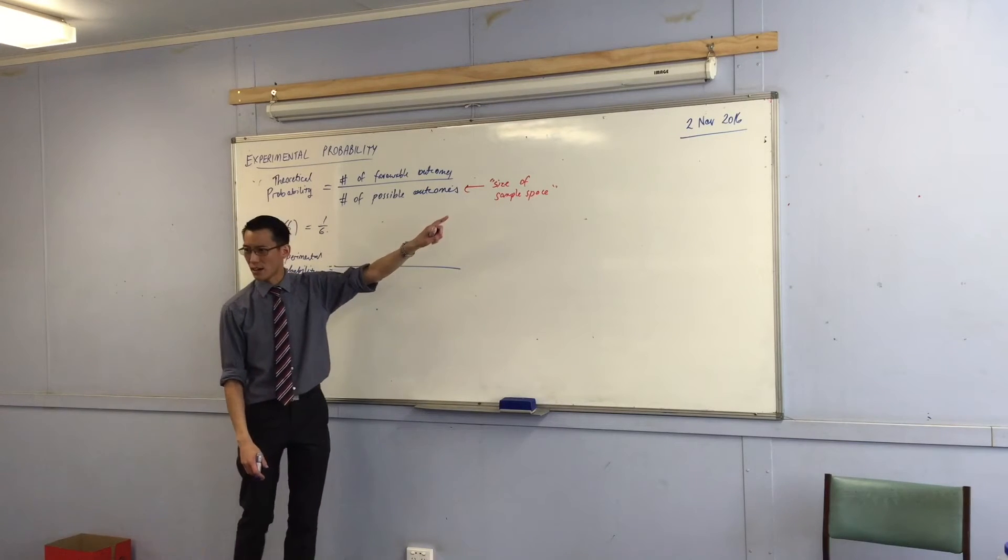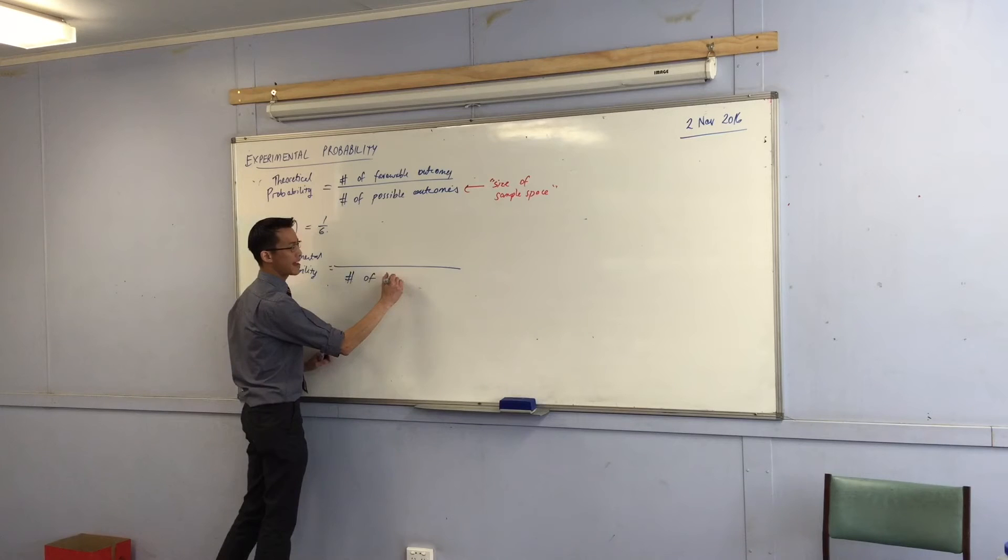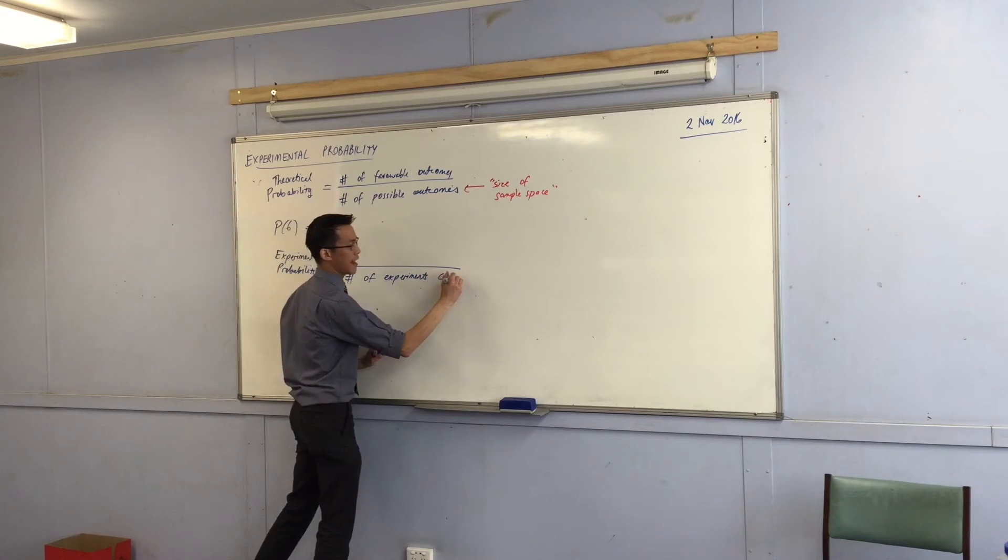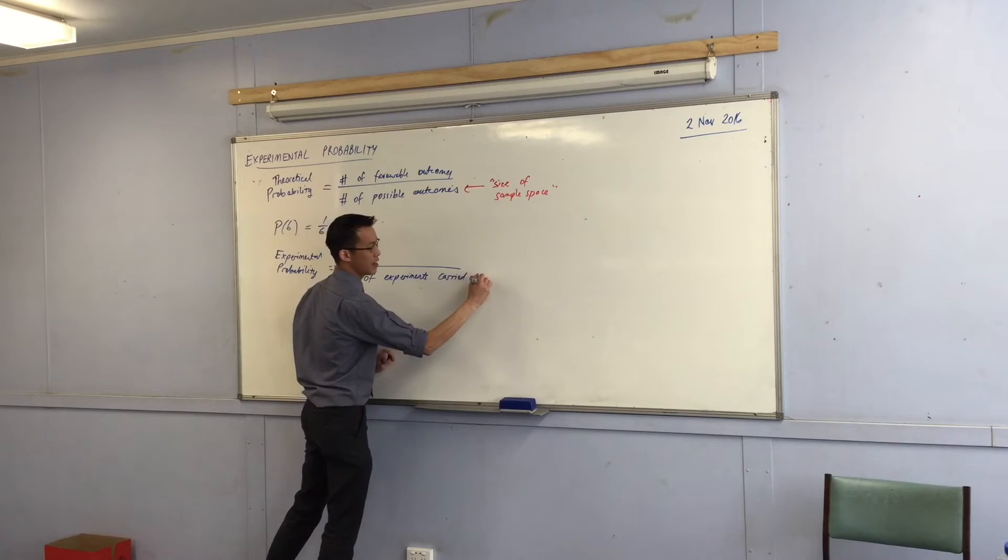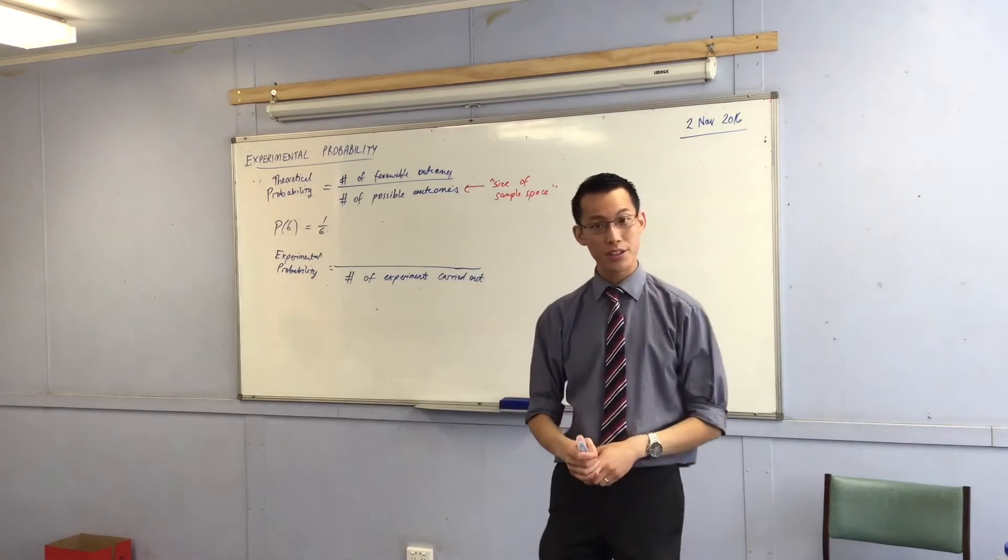Instead of the number of possible outcomes, what we're going to have is the number of experiments carried out. How many times did you actually roll the dice, right? Did you roll it once, ten times, a hundred times?